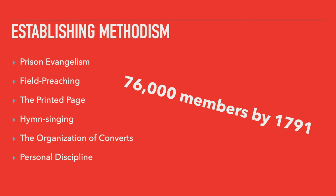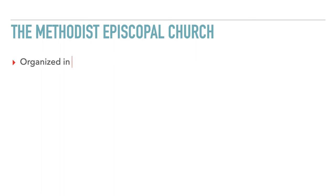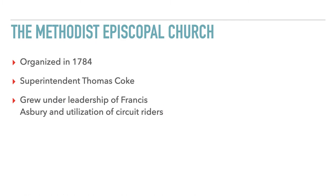With the Americas winning their independence, John Wesley believed American Methodists should establish their own church, which opened the doorway to the Methodist Episcopal Church. It was in 1784 that the Methodist Episcopal Church was organized under the superintendency of Thomas Coke, where American Methodism agreed to adopt both organizationally and individually the Wesleyan pattern of doctrine and discipline. This new denomination grew under the leadership of Francis Asbury as they sent circuit riders throughout the newfound nation, and they established annual conferences to organize the growth.